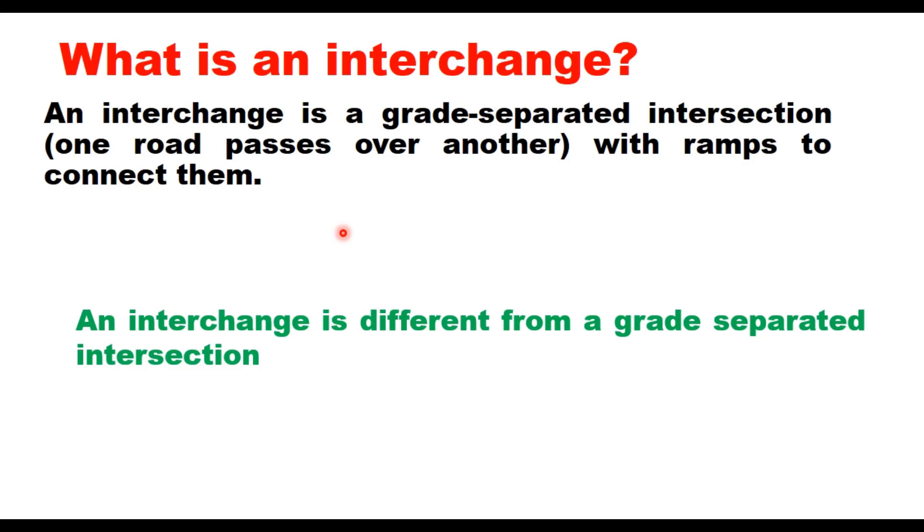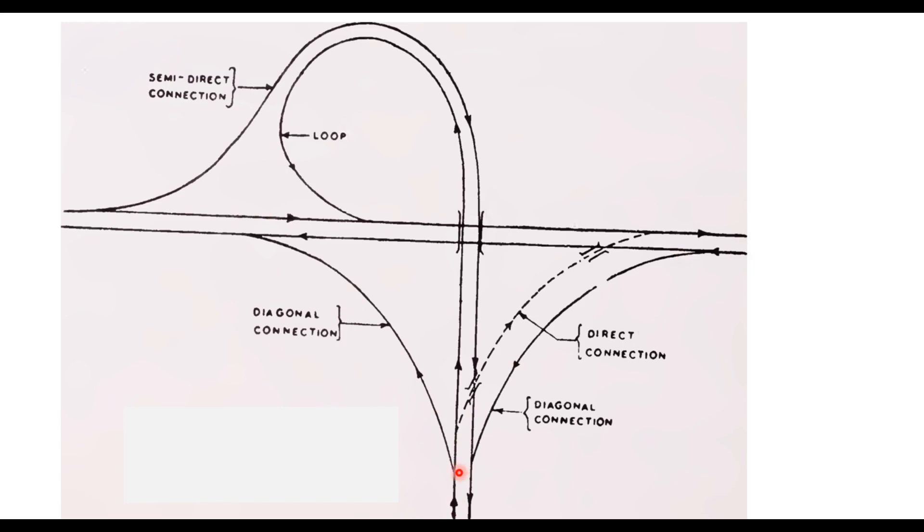Consider an interchange where a minor road meets a major street. The diagonal connection is used for left turns from the minor street to the major street or vice versa. These are also called outer connections. A loop is used when a vehicle makes a 270-degree turn to go right from one road to another. When loops are not provided, right turns can be accommodated through semi-direct or direct connections.